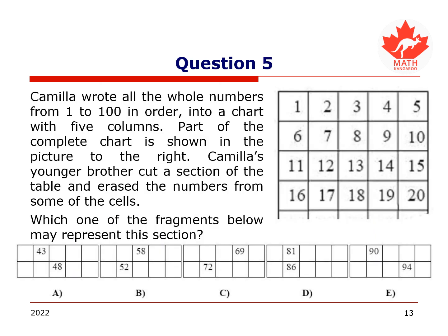This last question asks us to consider Camilla, who wrote all the whole numbers from 1 to 100 in order into a chart with five columns. Part of the complete chart is shown in the picture to the right. Camilla's younger brother cut a section of the table and erased the numbers from some of the cells. Which one of these fragments below may represent this section? I encourage you to pause this video to attempt the question on your own.